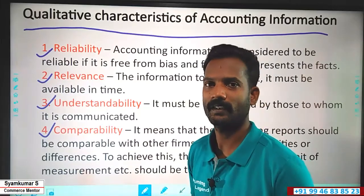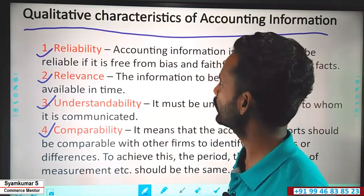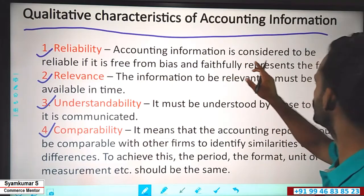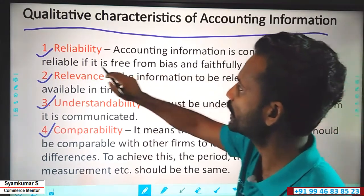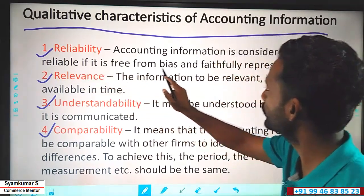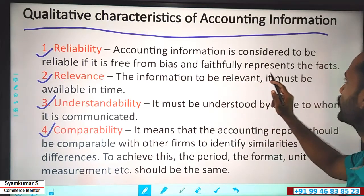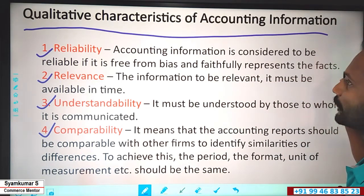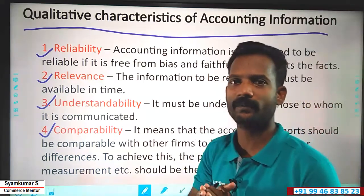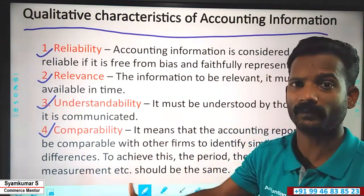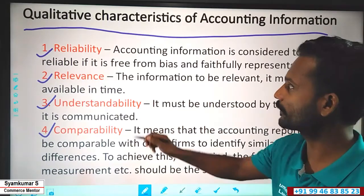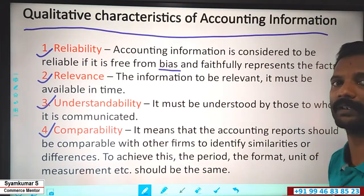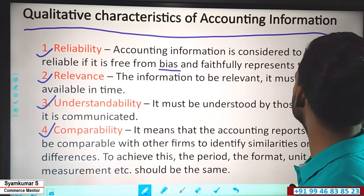Reliability — that is, reliability means accounting information. Accounting information is considered to be reliable if it is free from bias and faithfully represents the fact.